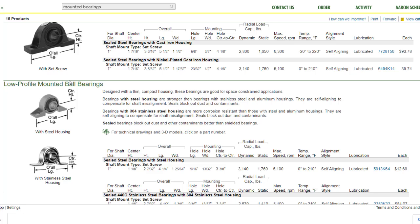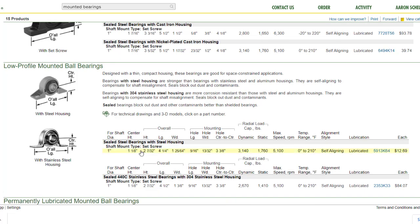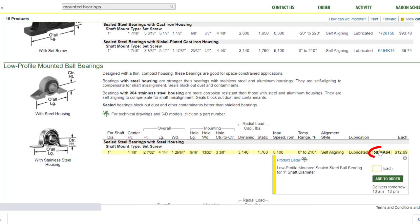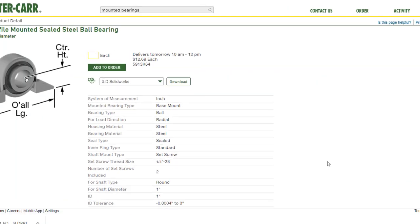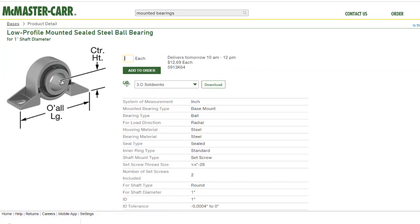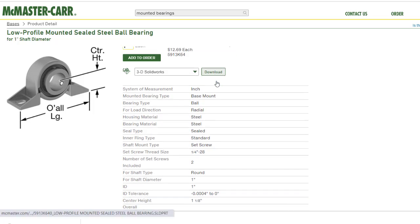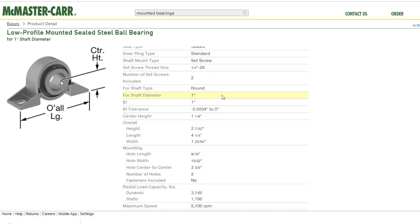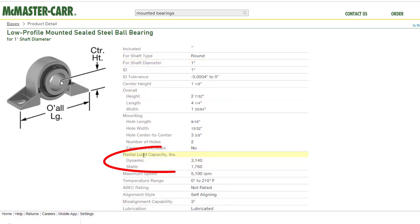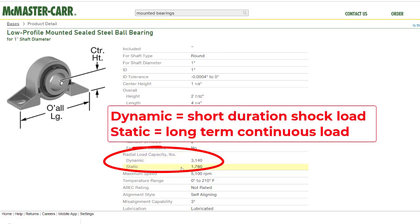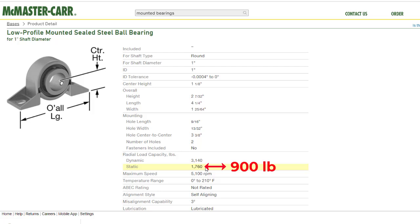And these low profile bearings are much less expensive. This one here is only $12. If I click here to see the product detail, you can see that I can actually download a CAD model of this bearing that I can use in my design. And I can see all of the specifications, including the radial load capability. And this has a static radial load capability of 1760 pounds. And according to our calculations, we needed something that could handle 900 pounds. Bearing A needed to handle 900 pounds, so this bearing would work just fine.